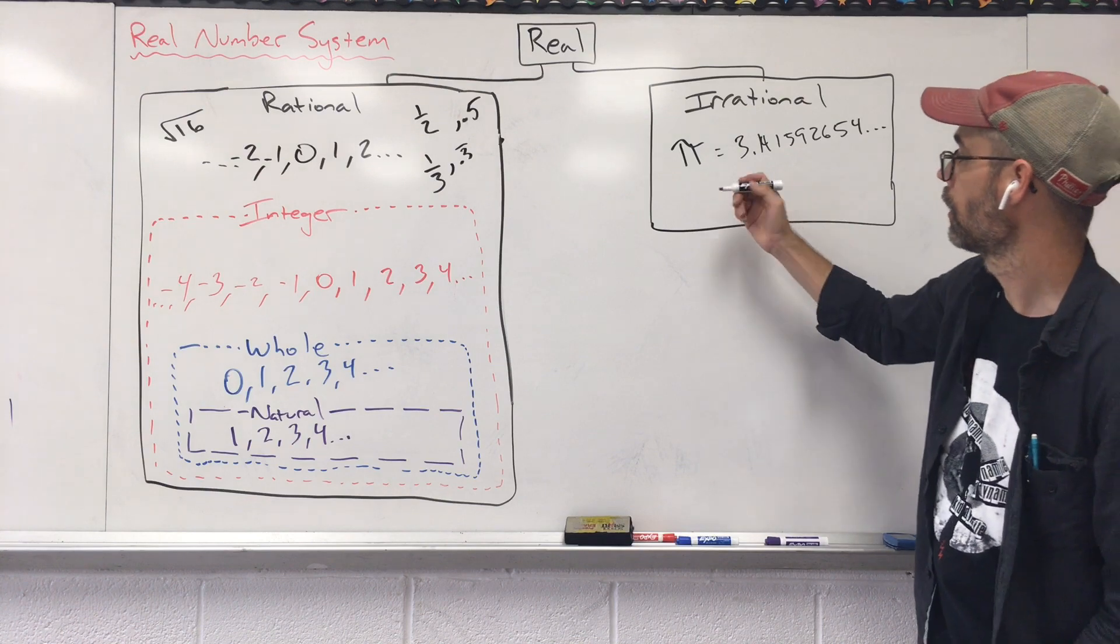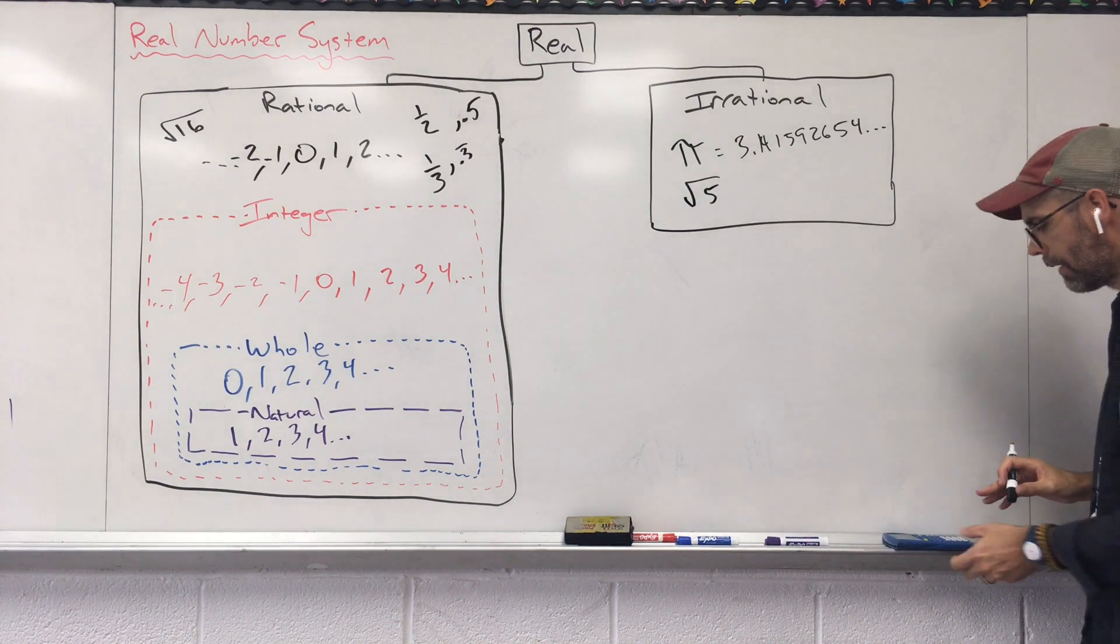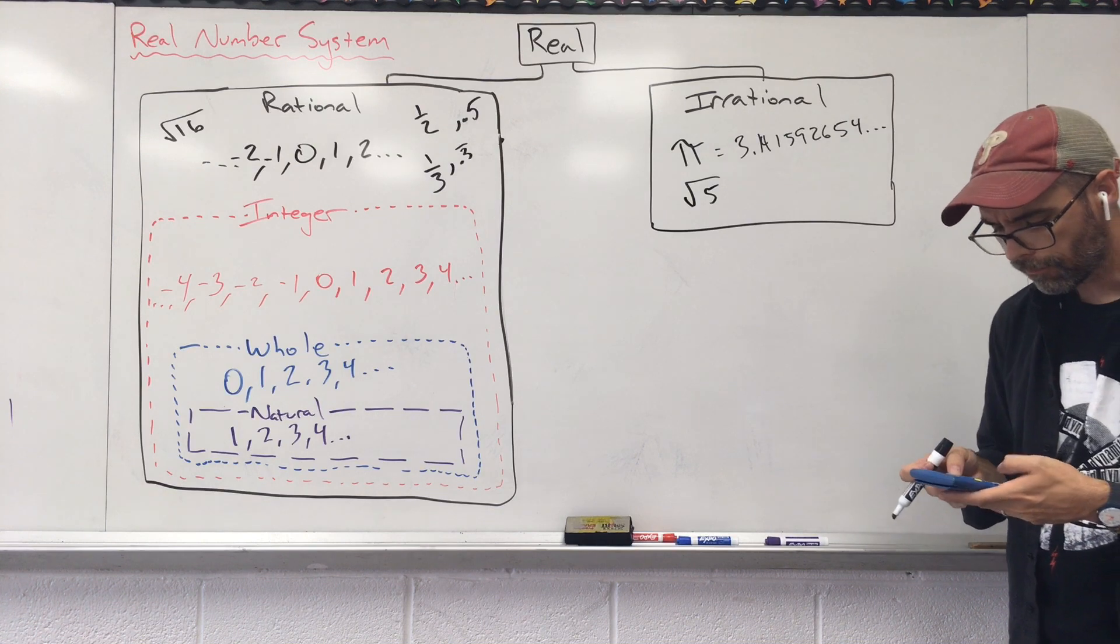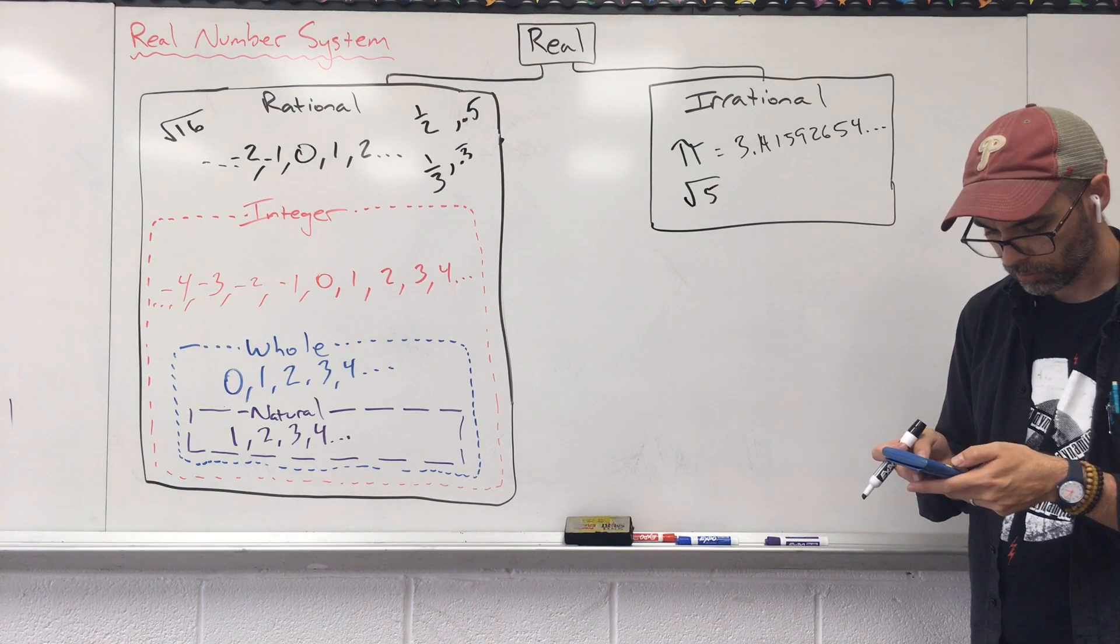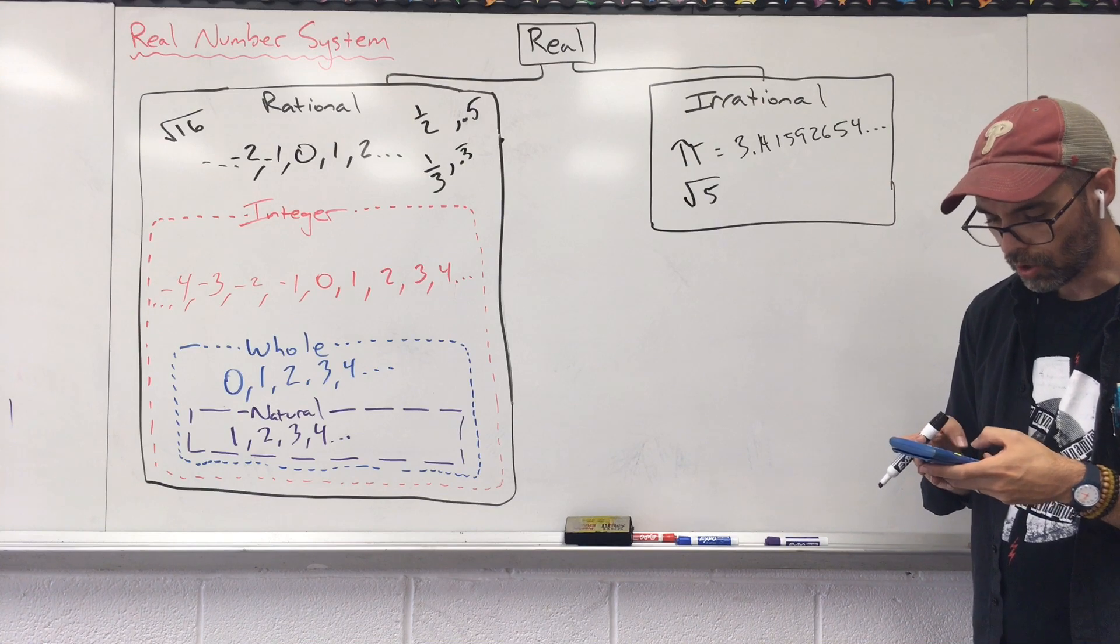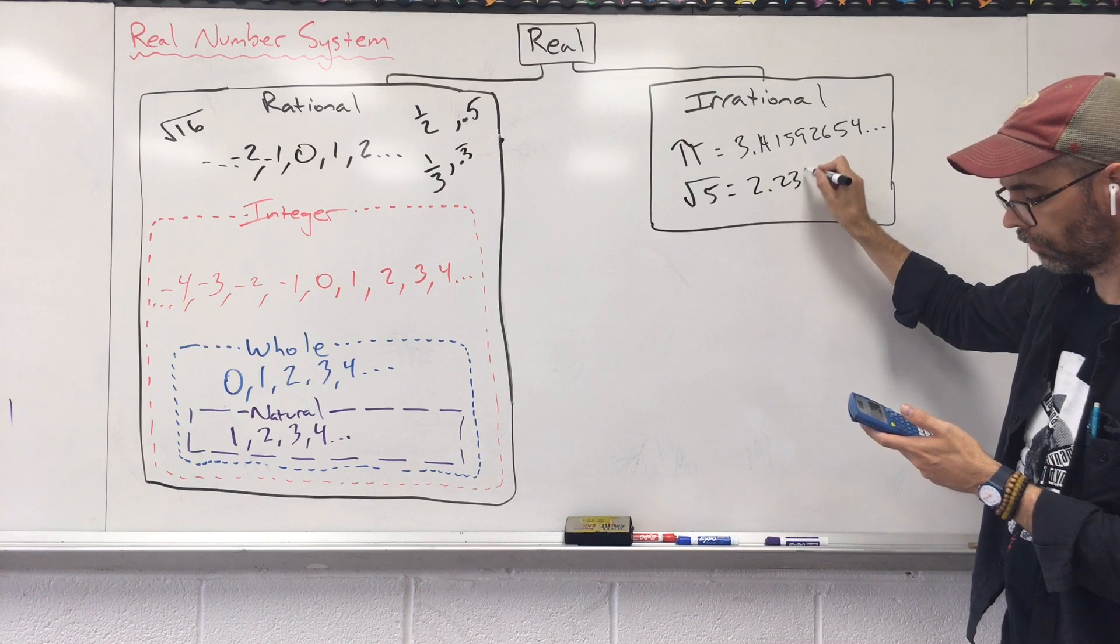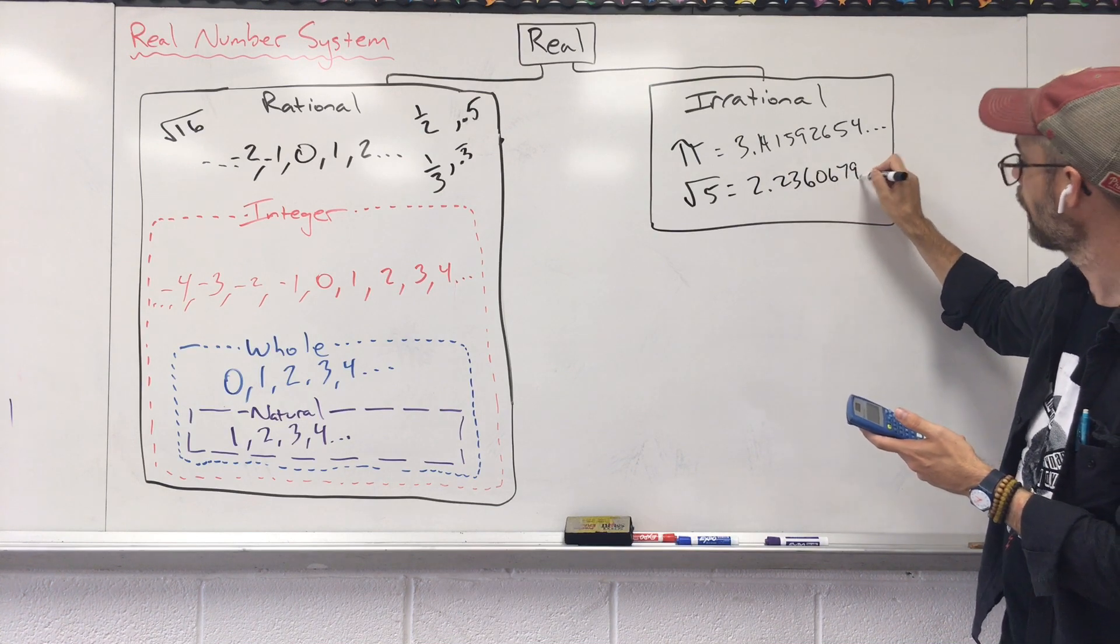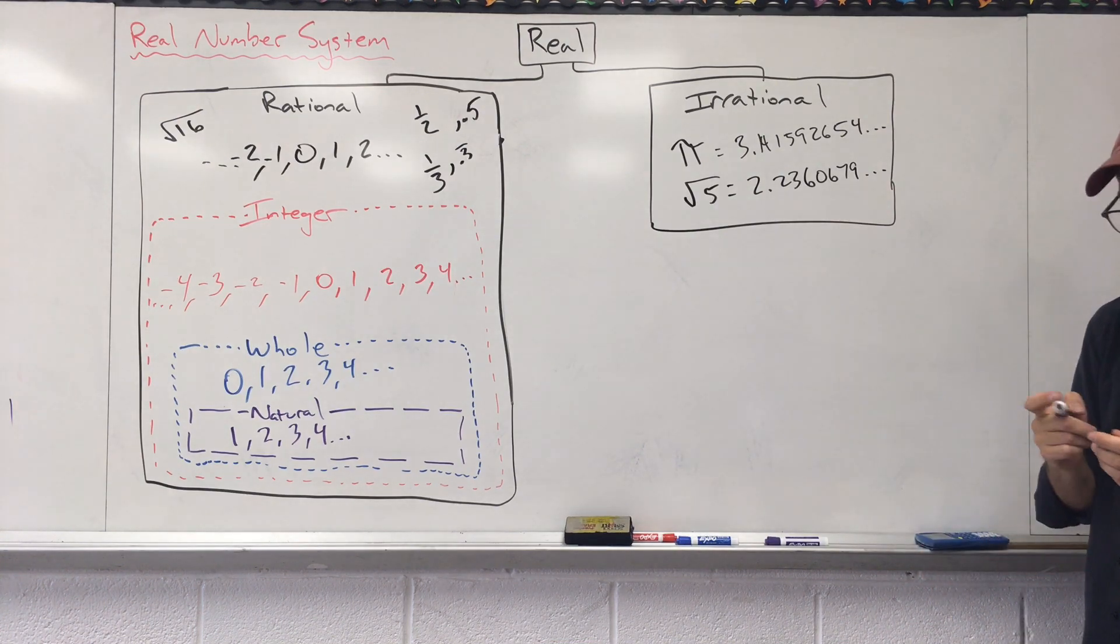I can also throw in something like square root of five. Why five? Well, square root of five is not a perfect square root. If I were to find the decimal value of this, 2.2360679 something, something, something, something. Who cares? That thing goes on and on forever.